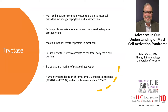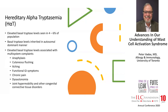The genes that code for tryptase are on the genome at a locus called TPSAB1. In the general population, somewhere between 4 to 6 percent have higher than normal levels of basal serum tryptase — typically elevated above 11.4 but generally within the teens, not in the range seen with mastocytosis, which may be 20, 60, 100, or 200.